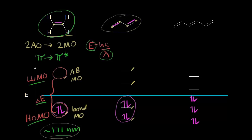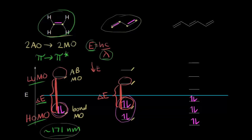Our job is to find the highest occupied molecular orbital and the lowest unoccupied molecular orbital, and look at the energy difference between them. Notice this energy difference is smaller than in the ethene example. If you decrease the energy, since energy and wavelength are inversely proportional, you must increase the wavelength. So instead of 171 nanometers, 1,3-butadiene absorbs light at approximately 217 nanometers.